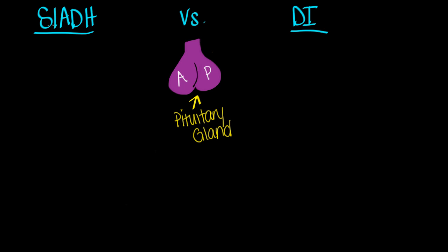SIADH stands for Syndrome of Inappropriate Anti-Diuretic Hormone, and DI stands for Diabetes Insipidus. Diabetes Insipidus is not related to Diabetes Mellitus, so don't confuse the two — they're very different. Let's backtrack a little bit. I drew a picture of the Pituitary Gland. A is for our anterior and P is for our posterior. ADH is secreted from our Pituitary Gland. Both SIADH and Diabetes Insipidus are issues with ADH. The difference is that in SIADH there is too much Anti-Diuretic Hormone being secreted, and in DI it's the complete opposite — too little, and in some cases none at all.